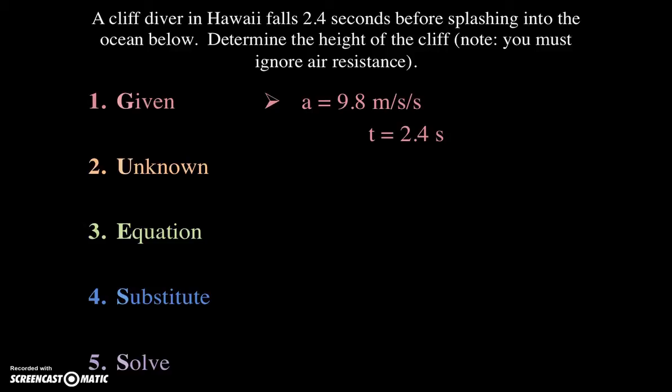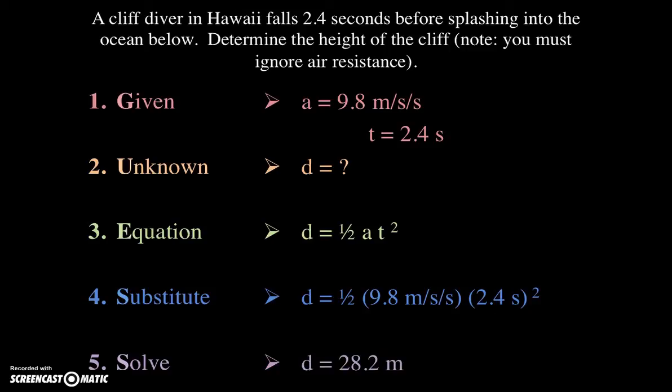Now, what is unknown? The question asks us to determine the height of the cliff. So the height of the cliff is a distance, so we're going to call the unknown D. Well, the equation that relates our givens to our unknown is D equals one-half AT squared. Let's substitute our acceleration and our time into that equation. And we get D equals one-half times 9.8 meters per second per second times 2.4 seconds squared. And don't forget to square the time. Plugging that into our calculator, the final distance or the height of the cliff is 28.2 meters.